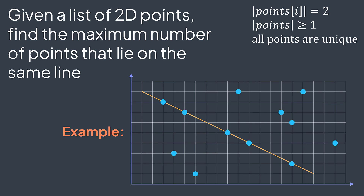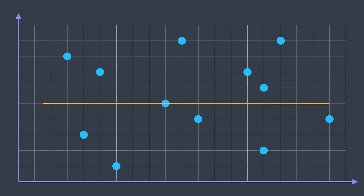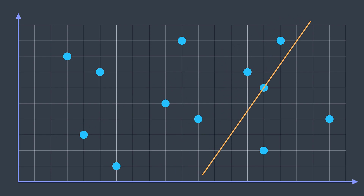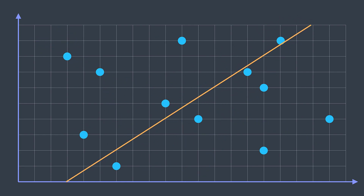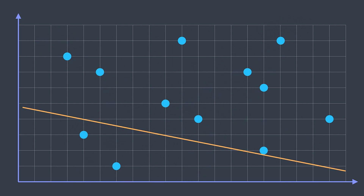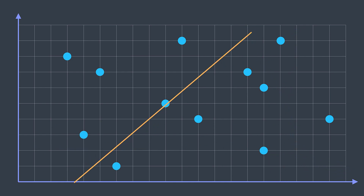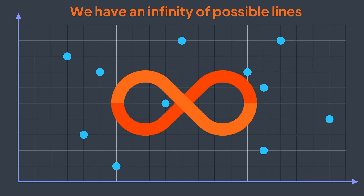How to solve this problem? We can think of a brute force solution where we traverse all the existing lines while keeping track of the maximum number of points passed by one of them. But it's just impossible, because there is an infinite number of lines — your solution would never stop.